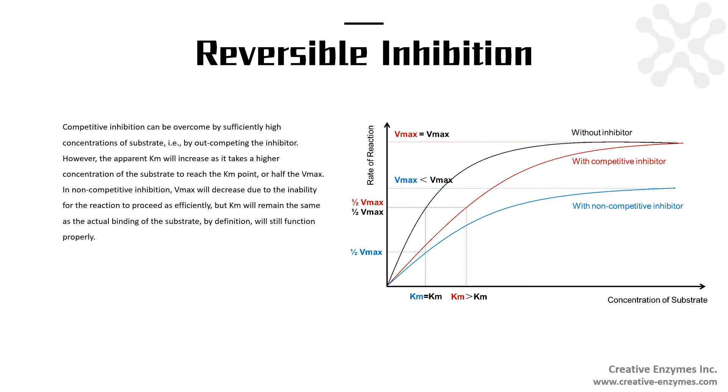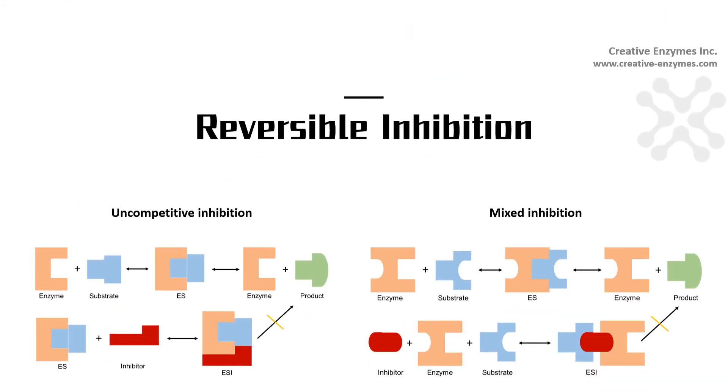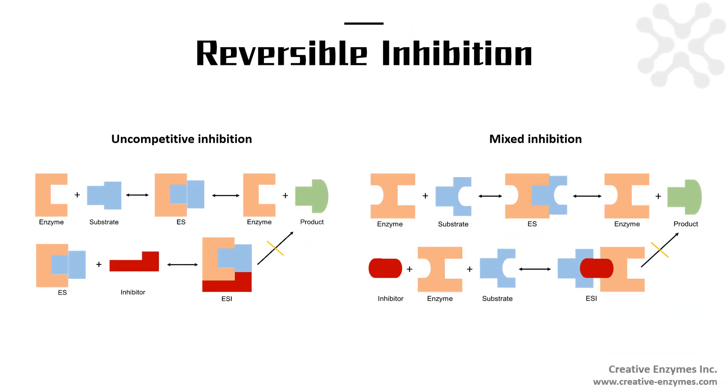In non-competitive inhibition, Vmax will decrease due to the inability for the reaction to proceed as efficiently, but Km will remain the same as the actual binding of the substrate, by definition, will still function properly. What is shown here is non-competitive inhibition and mixed inhibition.